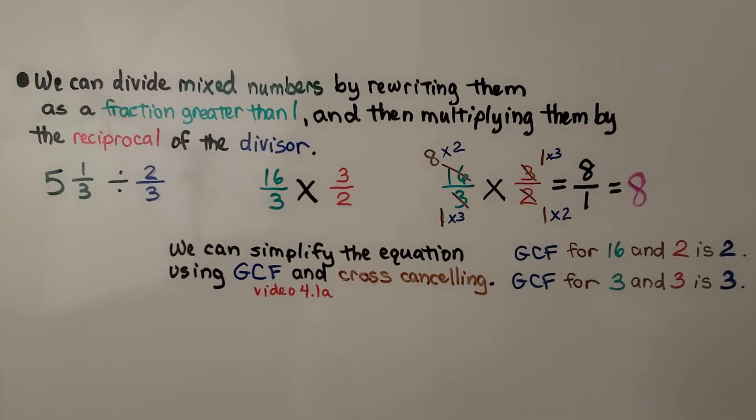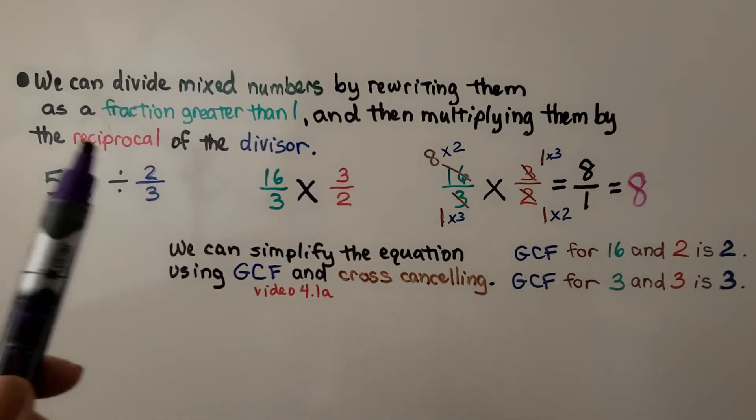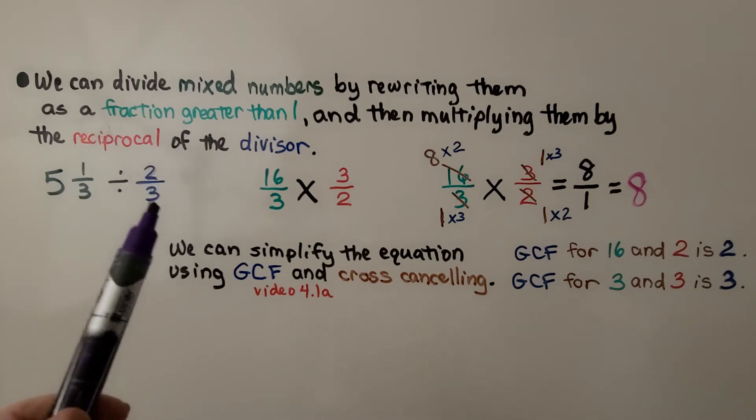We can divide mixed numbers by rewriting them as a fraction greater than one. That means the numerator is going to be greater than the denominator, and then multiplying by the reciprocal of the divisor.